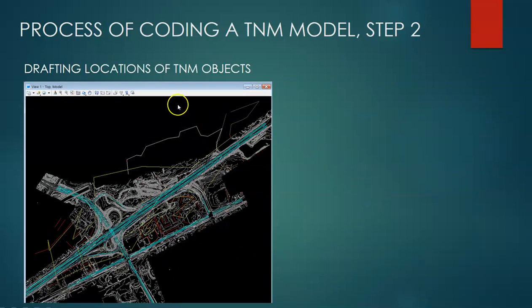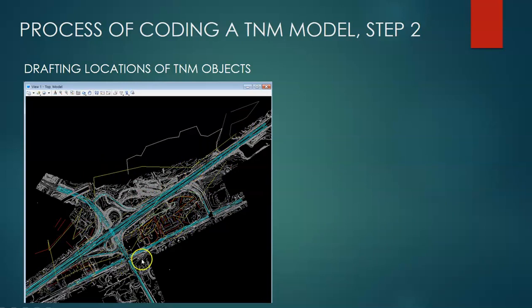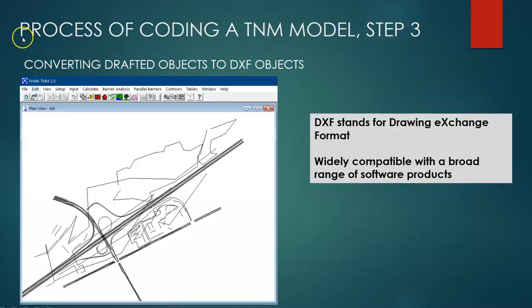Here is step two of the process. In the CAD file we have linework drafted showing the TNM objects, and we'll go into how we picked these locations in more detail later on. For the next step we'll take the linework coded in the CAD file and export it in a format called DXF with a .dxf file extension. DXF stands for Drawing Exchange Format — it's compatible with a broad range of software products, easily transferable between CAD platforms, and also compatible with TNM as we will cover later.